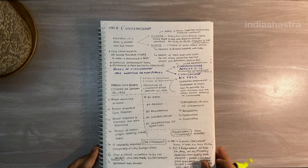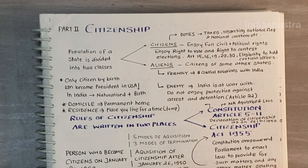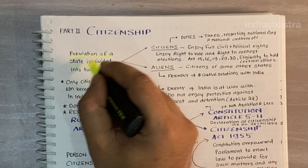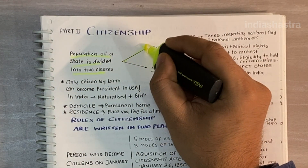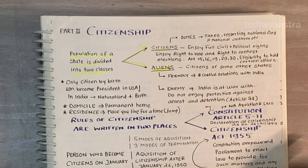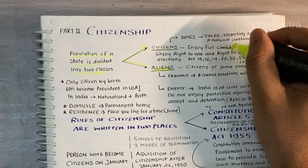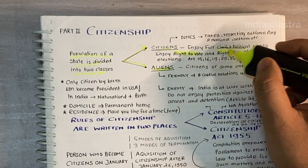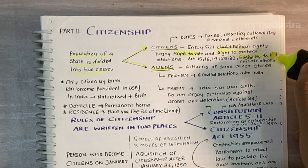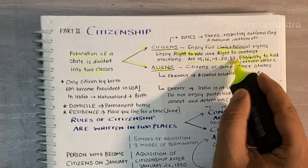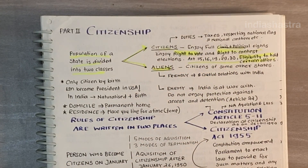Article 5 to 11 of the Indian Constitution. The population of the state is divided into two classes: citizens and aliens. Citizens are people who enjoy full civil and political rights such as the right to vote, the right to contest elections, and eligibility to hold certain offices. Only citizens enjoy Articles 15, 16, 19, 29 and 30 of the Indian Constitution, which are certain fundamental rights.